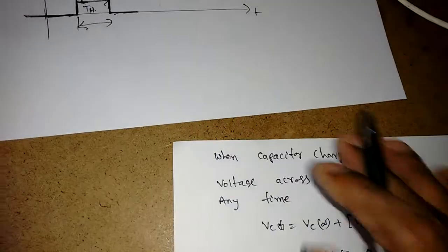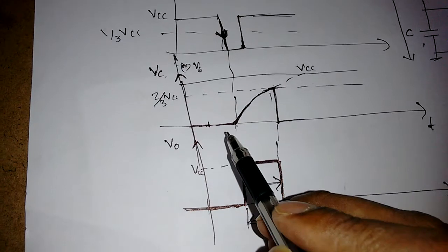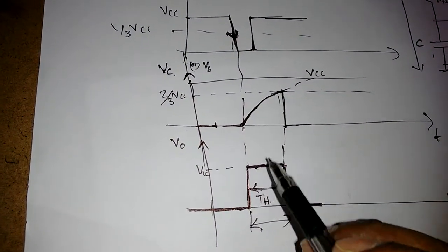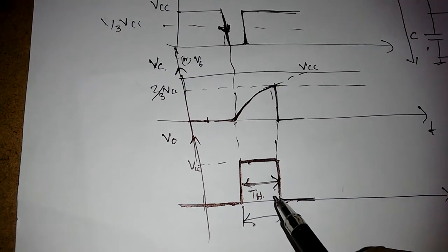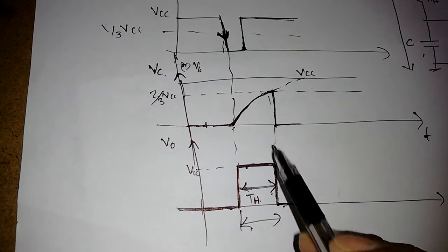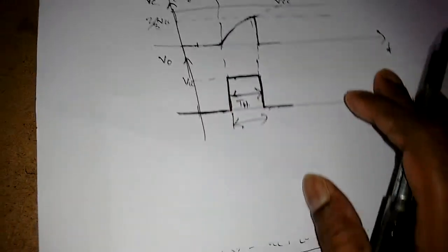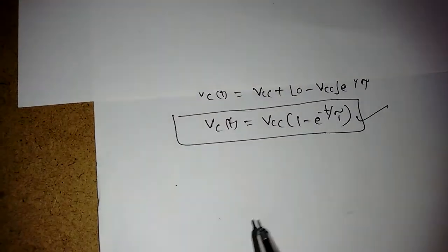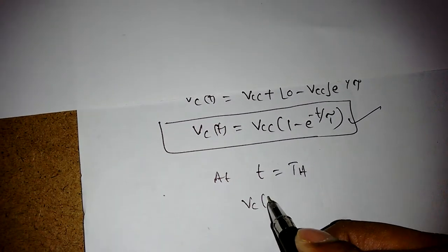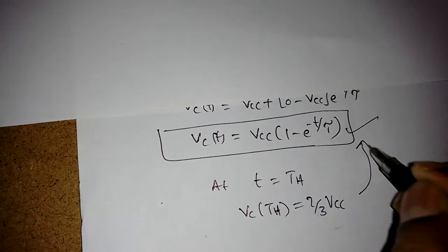Looking at the waveform, the capacitor charges from zero. At the end of the pulse width — at t = Th — the capacitor voltage is (2/3)·VCC. So from the expression, Vc(Th) = (2/3)·VCC.